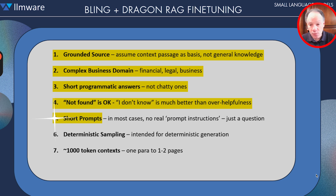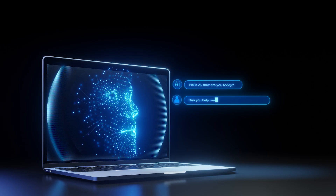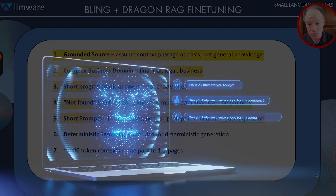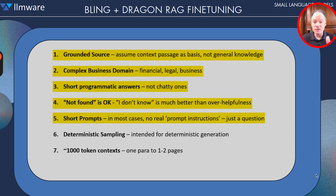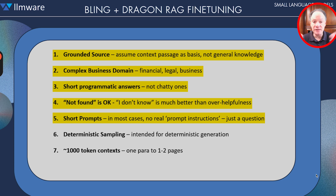Very short prompts — what is very different perhaps from using an OpenAI-type model is there are no real prompt instructions. For the most part, it's a simple packaging of that grounded source: read this, along with some type of question or analysis being requested against that source material. So in most cases, you don't have to spend a lot of time inventing complex prompt magic.